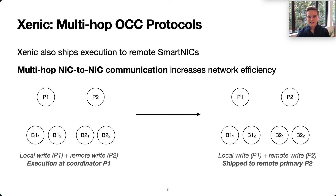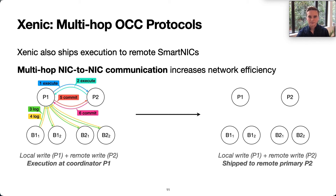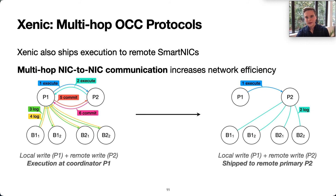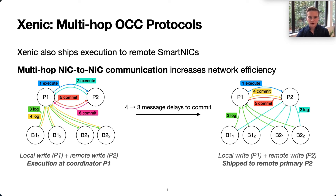For example, here's a transaction writing to the local primary shard and one remote primary. The commit protocol consists of three request-response rounds between the coordinator and the remote shards. With ZNIC, we can instead apply multi-hop communication. After the coordinator accesses the local object, it ships execution to the remote primary. Then the remote primary sends log entries to the backups. The backups then return an ACK directly to the coordinator, reducing overall communication and saving a message on the critical path.